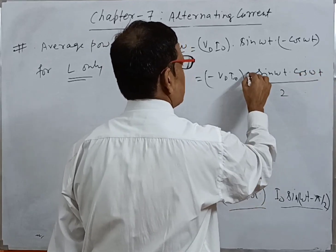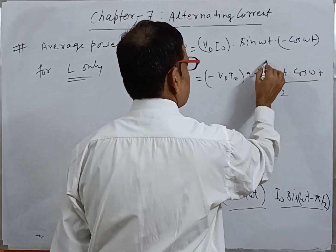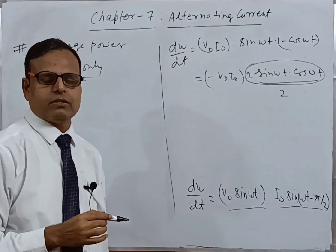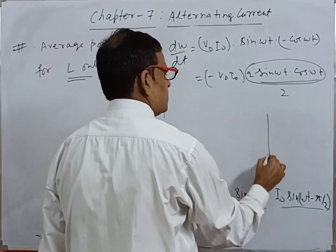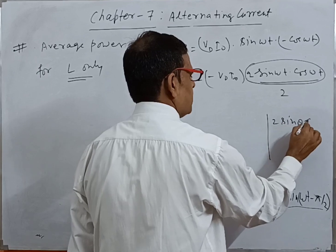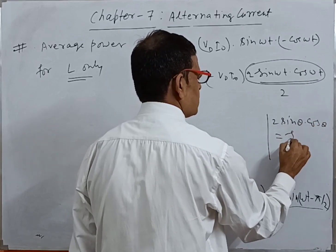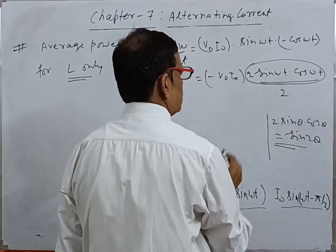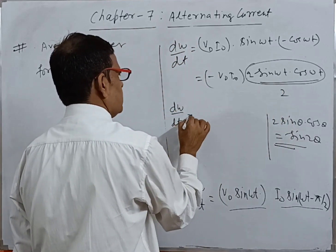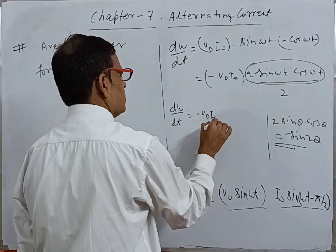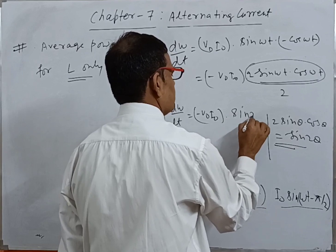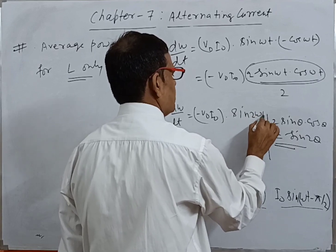Let us divide and multiply by 2, so that we can use the trigonometric identity: 2 sin θ cos θ = sin 2θ. Therefore, dW/dt = −(V₀I₀/2) sin(2ωt).